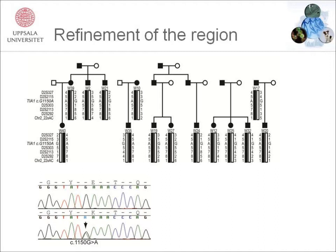The haplotype spans approximately 1.5 megabases and contains a little over 30 known genes. We performed exome sequencing on two individuals and were able to identify a single shared heterozygous variant within the chromosome 2 region. The variant was also excluded from 300 in-house exomes available.